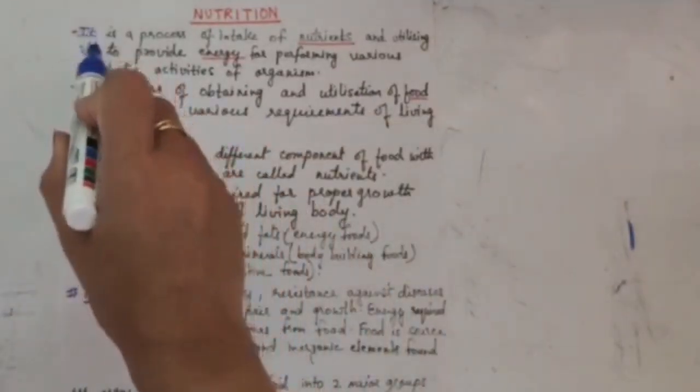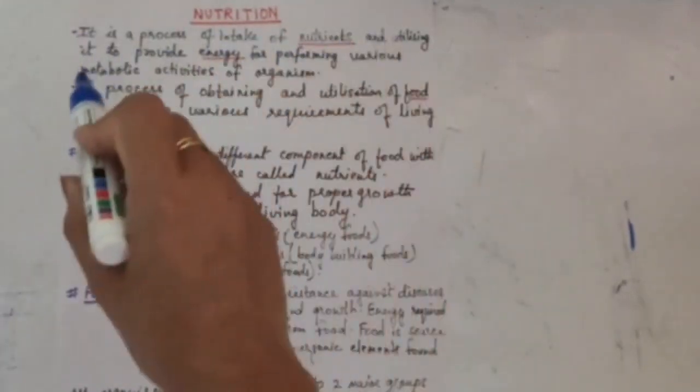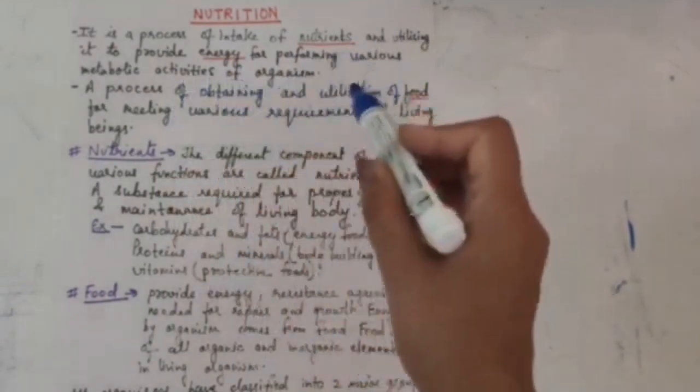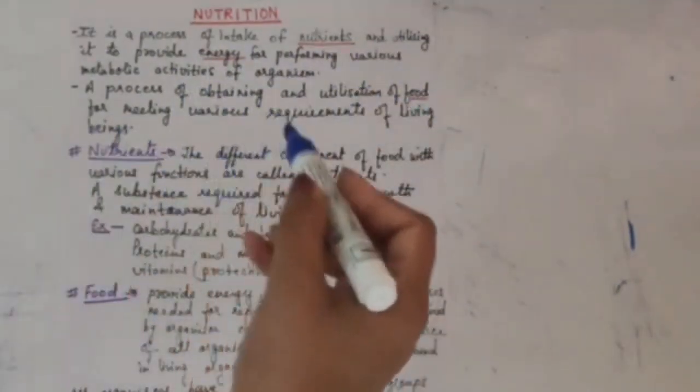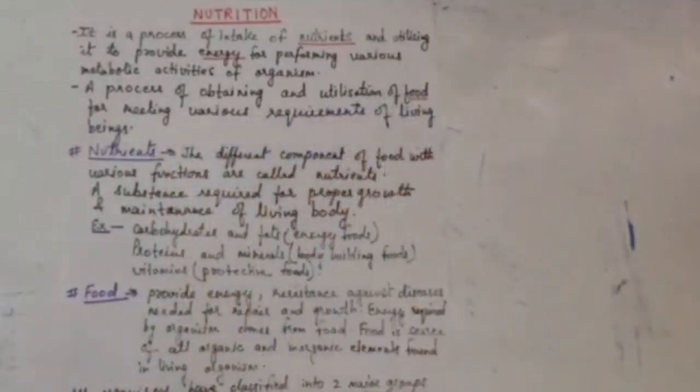It is written here: it is a process of intake of nutrients and utilizing it to provide energy for performing various metabolic activities of organisms. We can also say a process of obtaining and utilization of food for meeting various requirements of living beings.